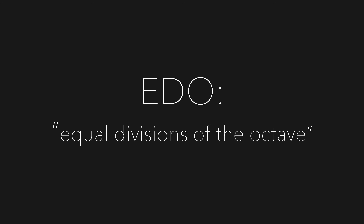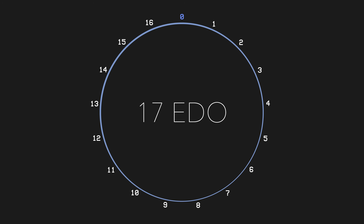EDO, or E-D-O, is an acronym for equal divisions of the octave, and refers to a tuning system where an octave is divided into a specific number of equal steps. For example, 31 EDO divides the octave into 31 equally spaced steps, 17 EDO into 17 equal steps, 12 EDO into 12 steps, and so on.